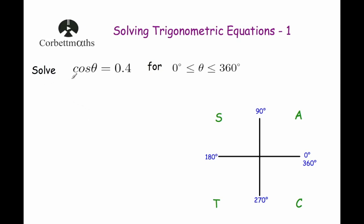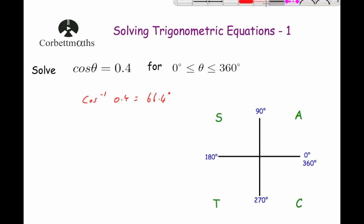Our first question says: solve cos θ = 0.4 for angles between 0° and 360°. We're going to put our angles on the CAST Diagram, and we're going to work out the inverse cos of 0.4. We do shift cos of 0.4, and we get 66.4° to one decimal place. So in our first quadrant, our angle is going to be 66.4°, and we'll put that on the CAST Diagram in all four quadrants.